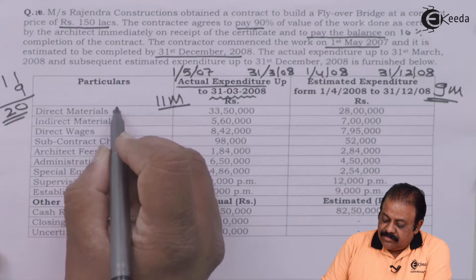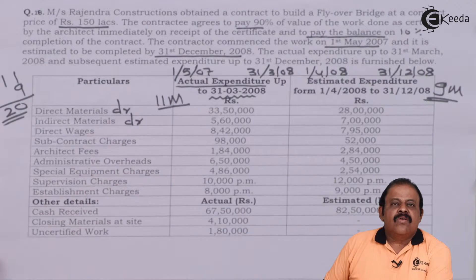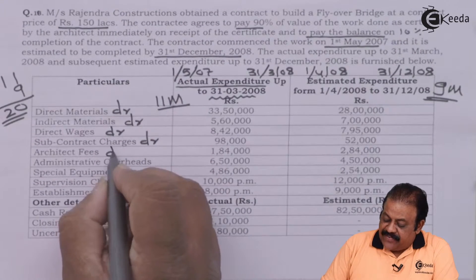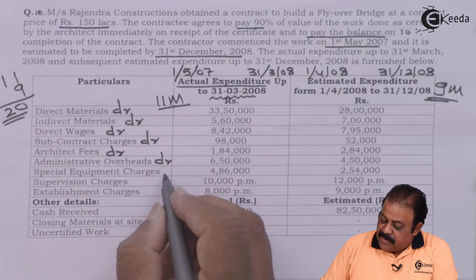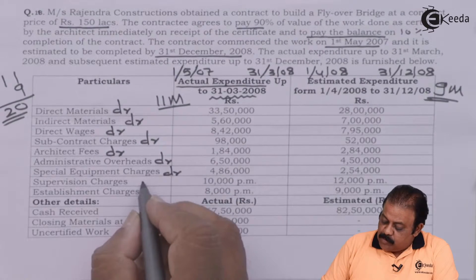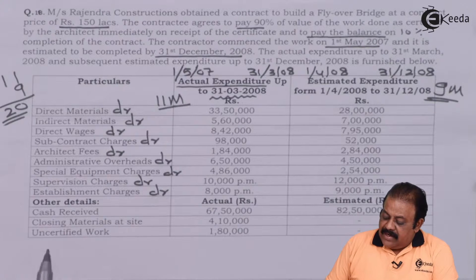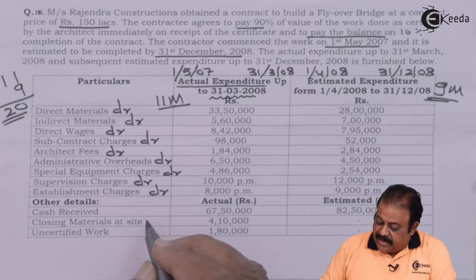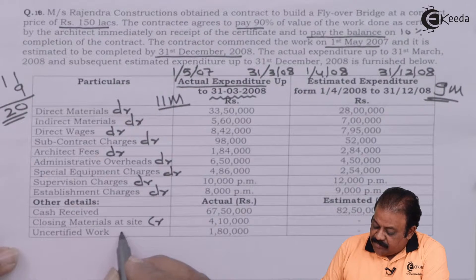The expense items debited to the contract account include: direct materials, indirect materials, direct wages, subcontract charges, administration overheads, special equipment charges, supervision charges, and establishment charges. Additional details given include cash received, closing material at site — recorded to the credit of the contract account — and uncertified work, also recorded to the credit of the contract account.